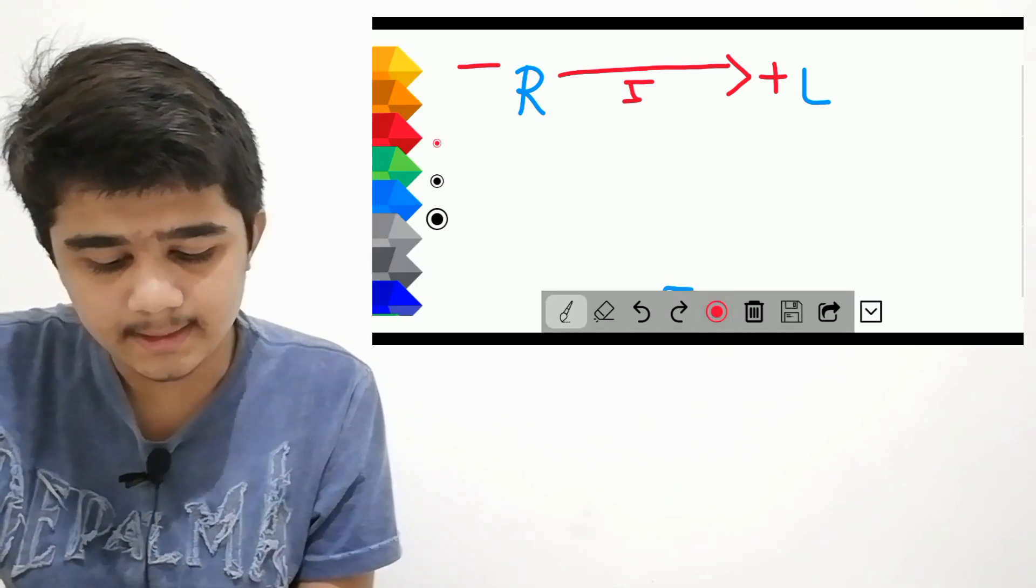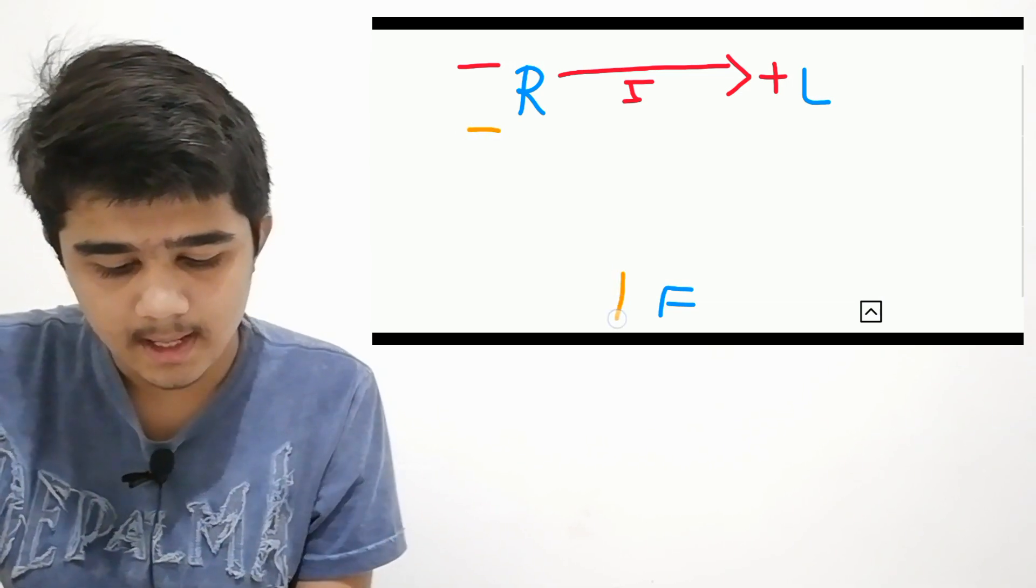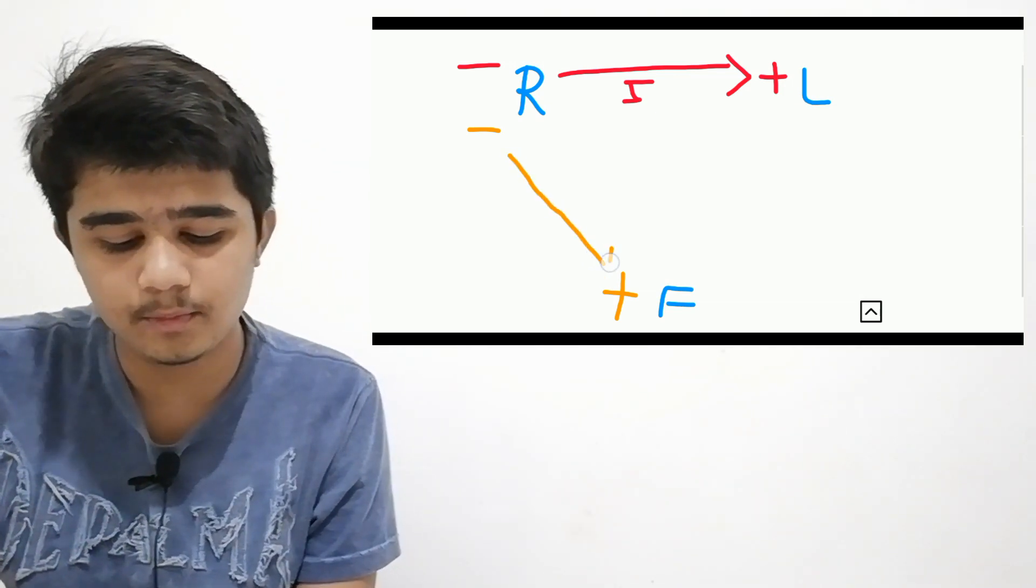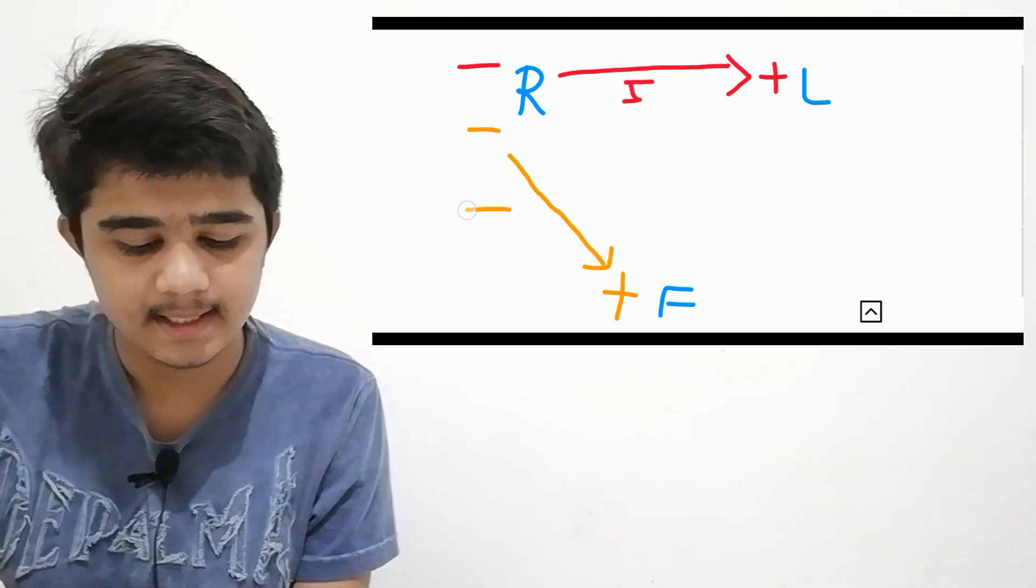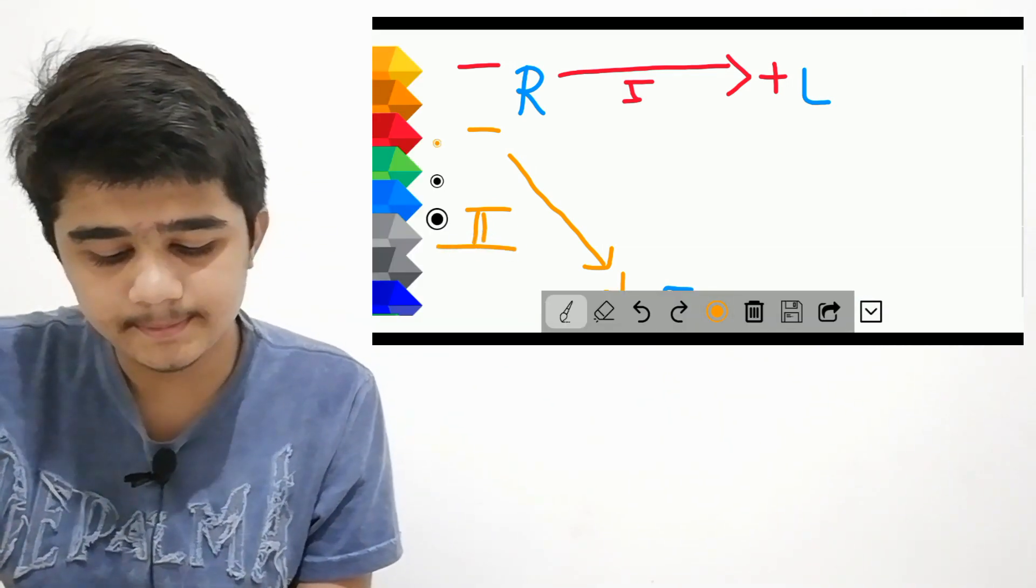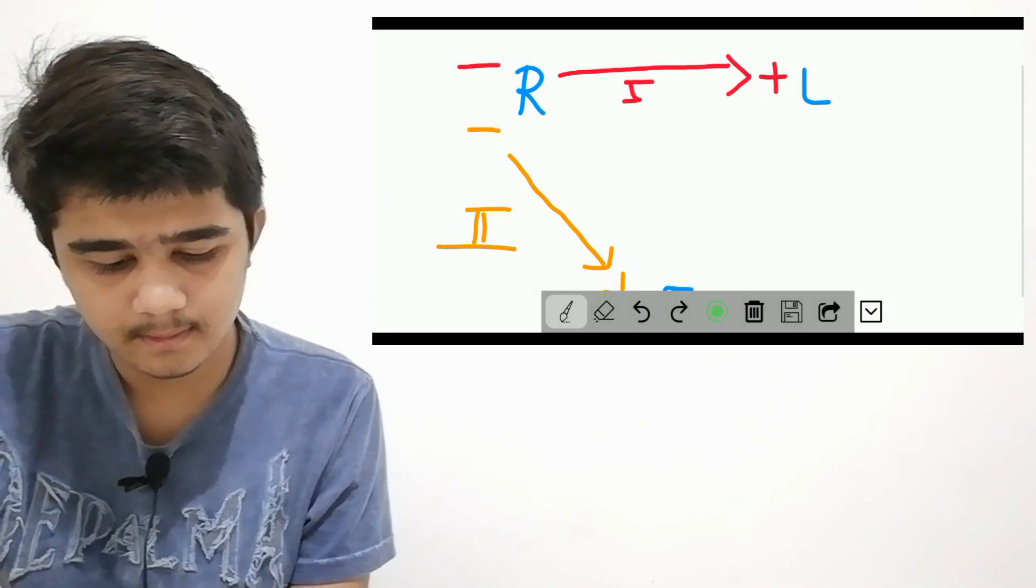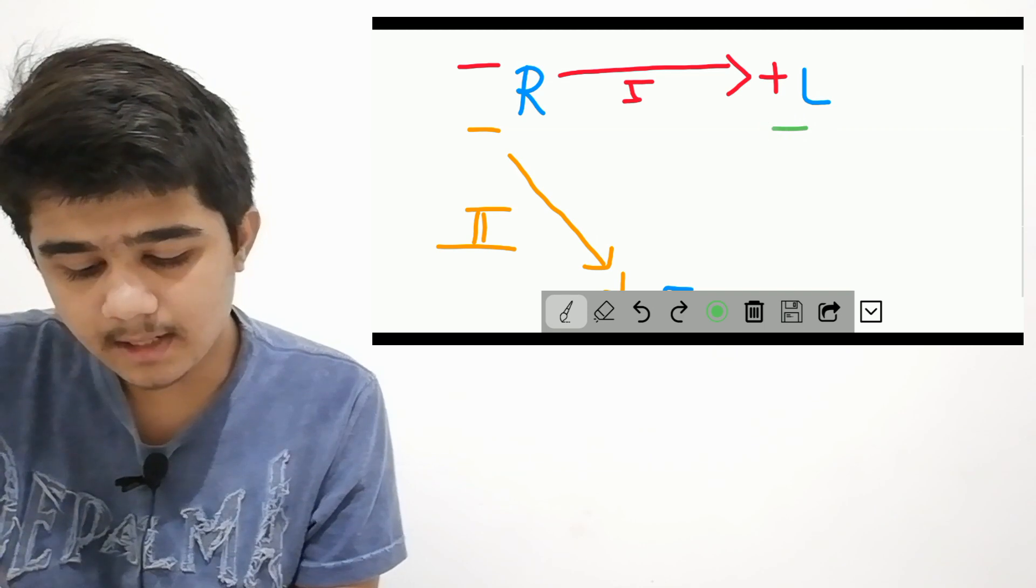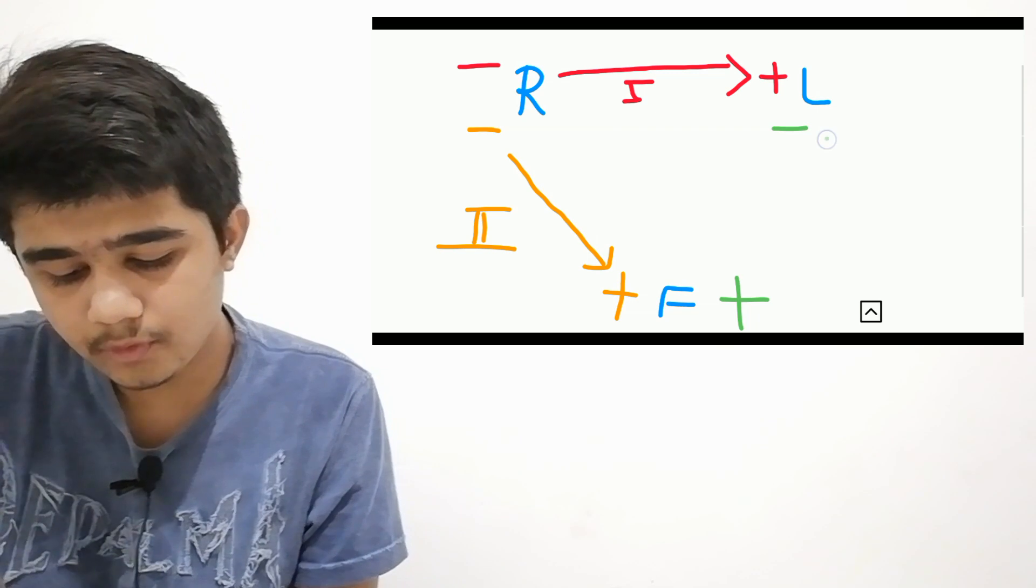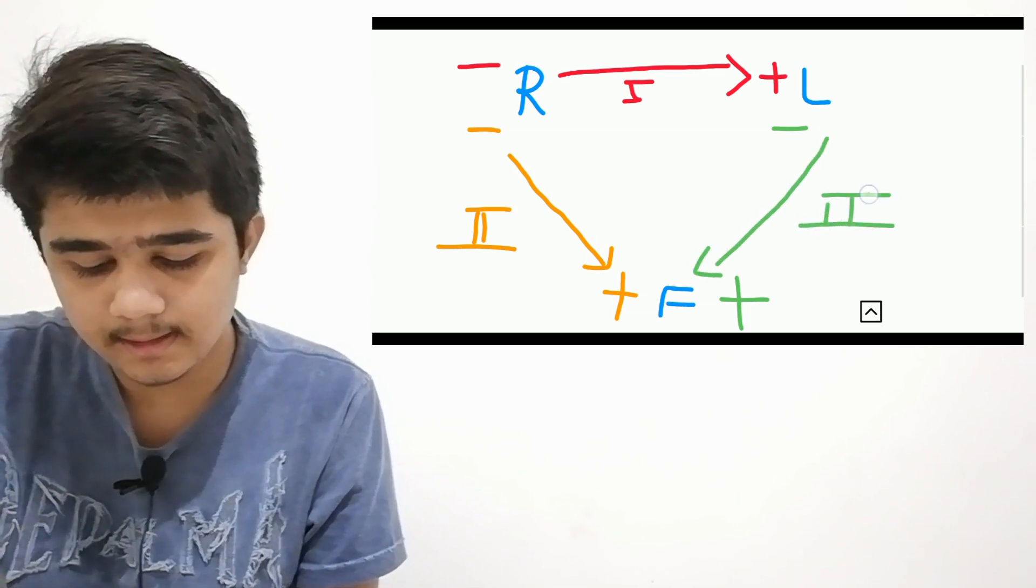Second one is right arm negative, left foot positive. Current flows from negative to positive, so this is lead 2. Third one: left arm is negative, left foot is positive. Current flows negative to positive, so this is lead 3.